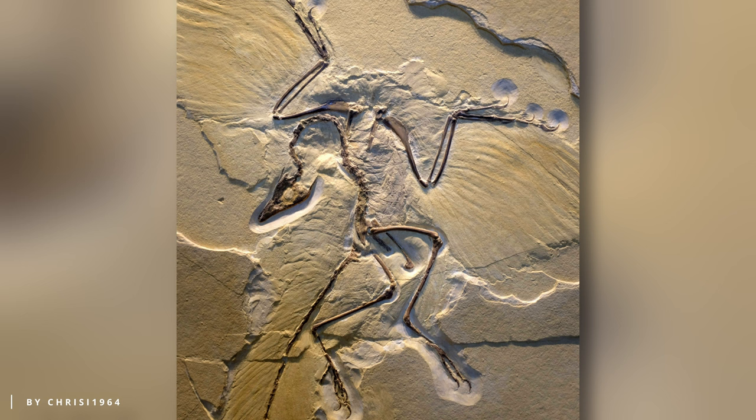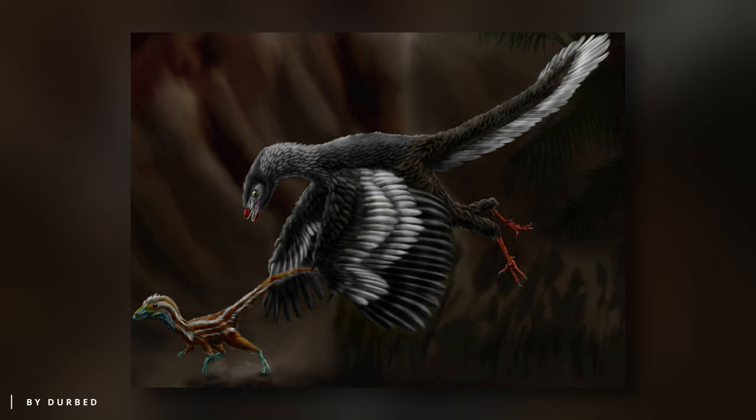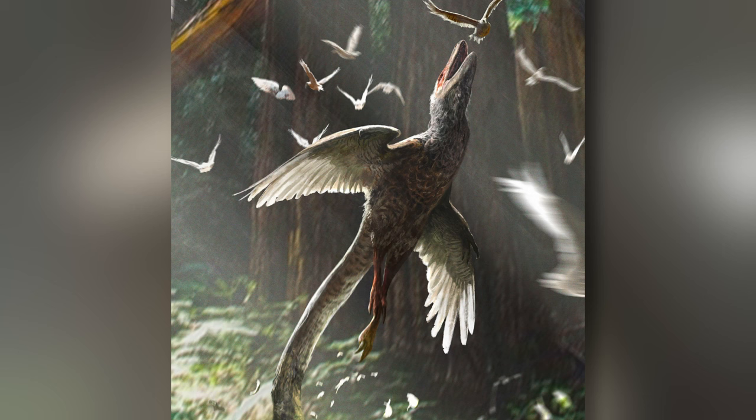Unearthed in 1861, this specimen is exceptionally well-preserved, likely due to rapid burial in soft mud shortly after its death. Since its original discovery, 11 more fossils have been found, with most of them carrying impressions of feathers. Initially, Archaeopteryx was considered the oldest known bird. However, a 2011 study revealed its classification as a non-avian dinosaur closely linked to the origin of birds.